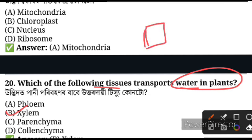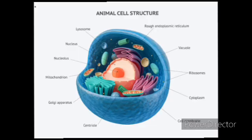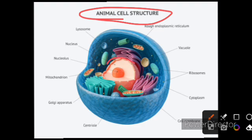Let me clear up any confusion. Here is the structure of an animal cell. This is an animal cell — let me clear the confusion. This is a cell, this has a nucleus. This is the nucleus.